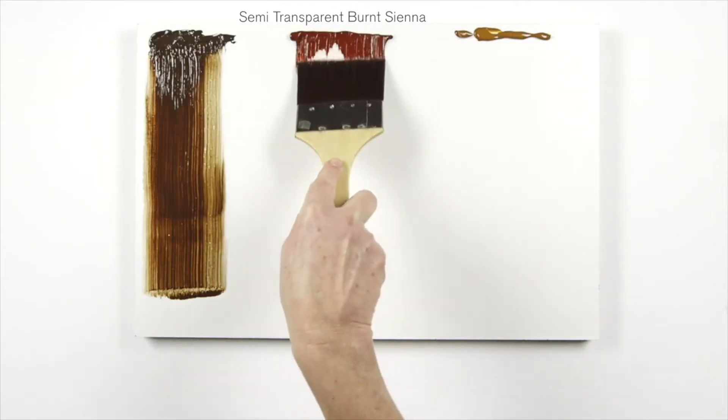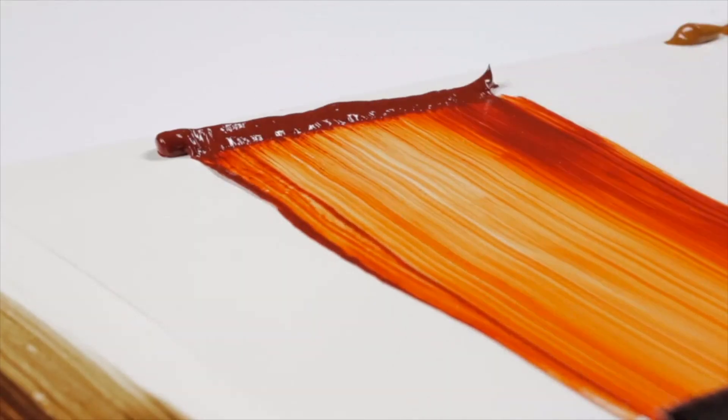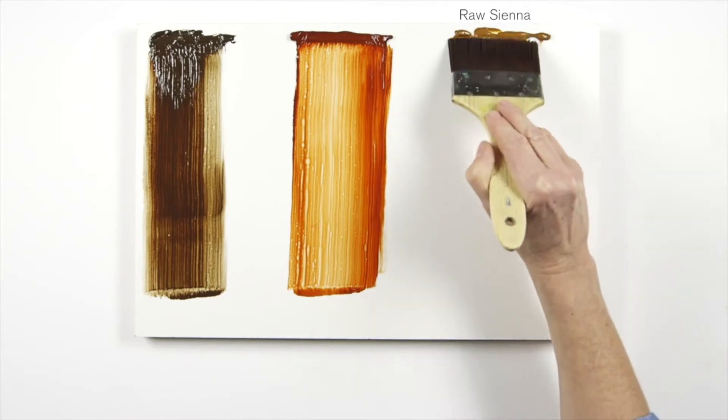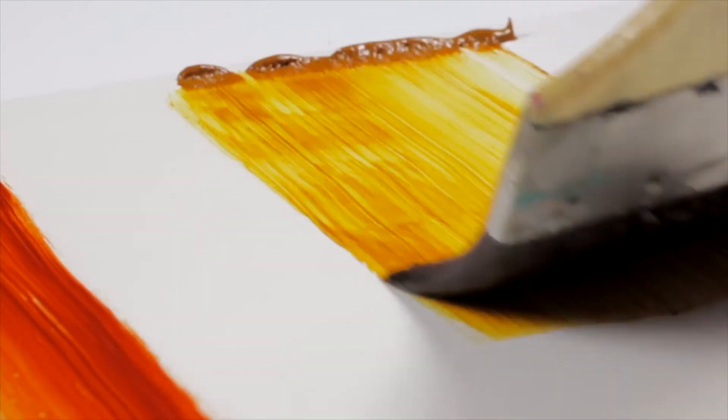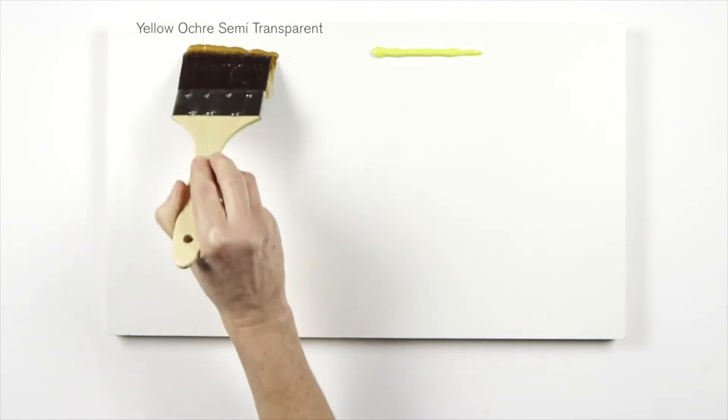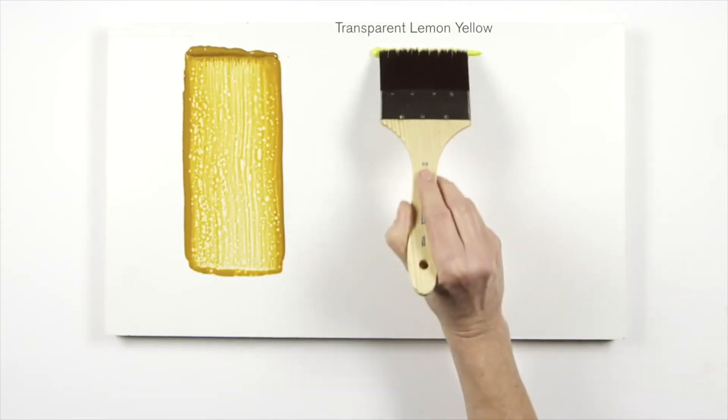Then complete your palette with semi-transparent burnt sienna, raw sienna, yellow ochre semi-transparent, and a transparent lemon yellow.